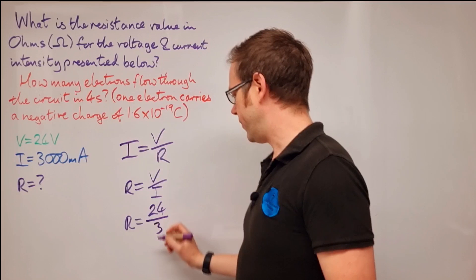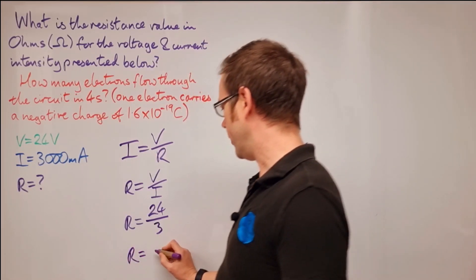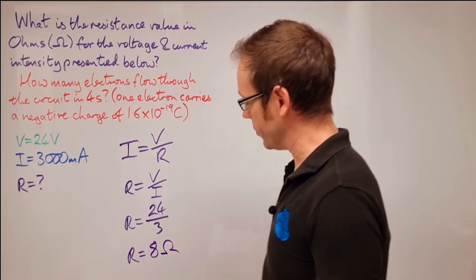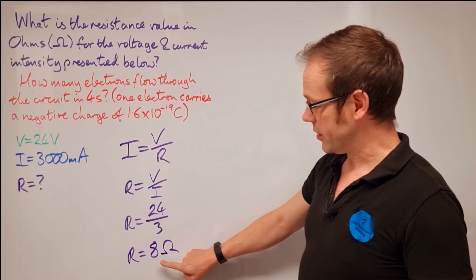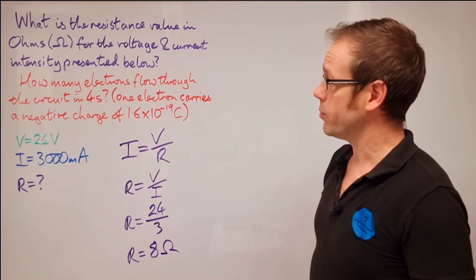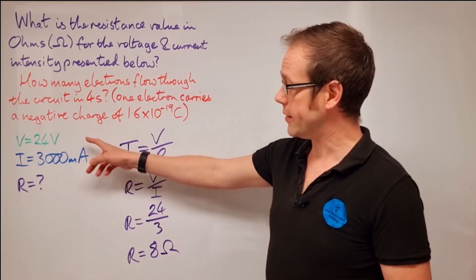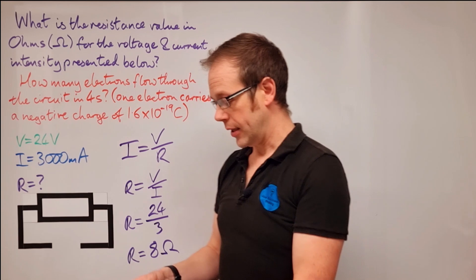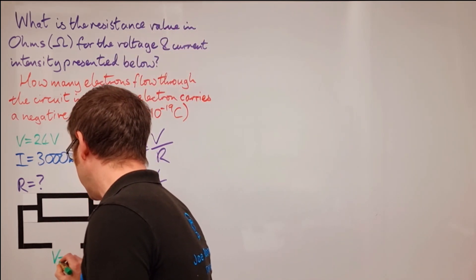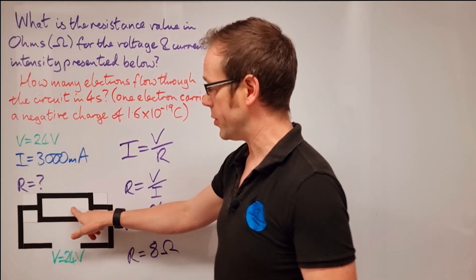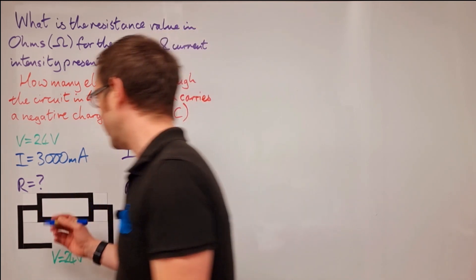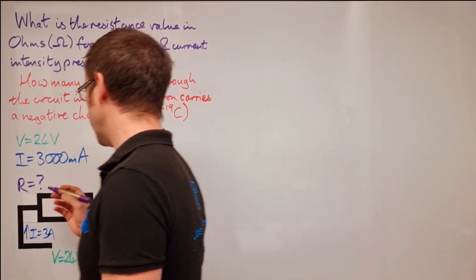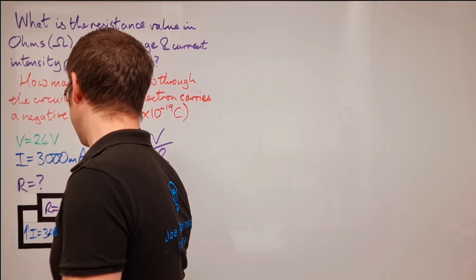So 24 divided by three. Hopefully we don't need a calculator for that one. So how many threes are there in 24? And we know, of course, that there are eight in there. So this load, this connection has eight ohms of resistance. So that's the omega symbol, which is the unit symbol for resistance. So R is equal to eight ohms. We've answered the first part of the question. We've found the resistance that's associated with that voltage and that current in a circuit.